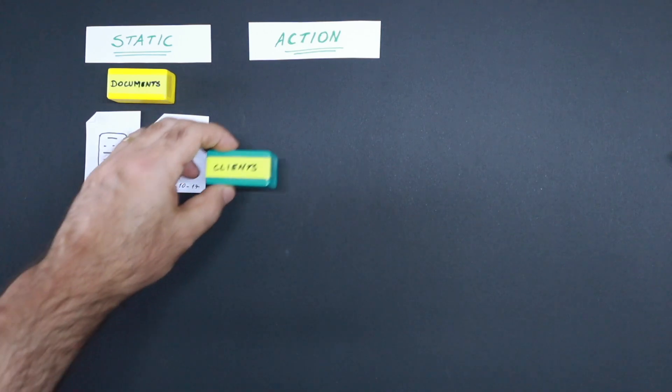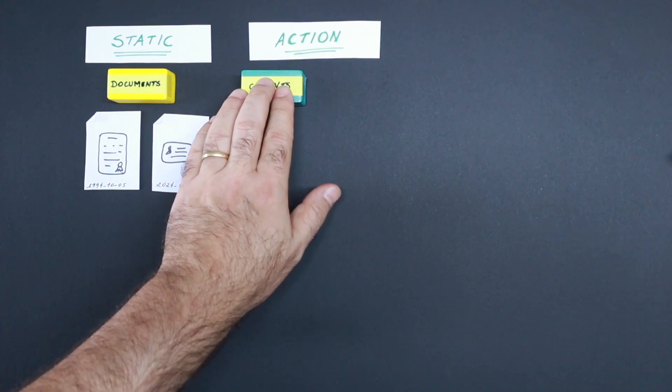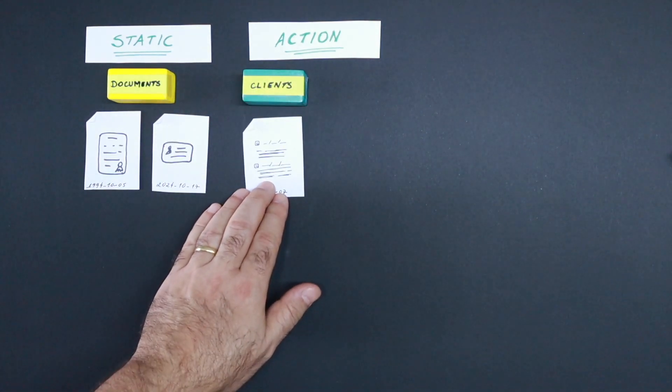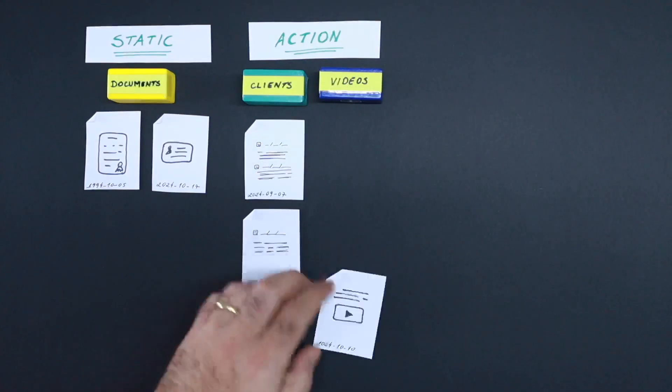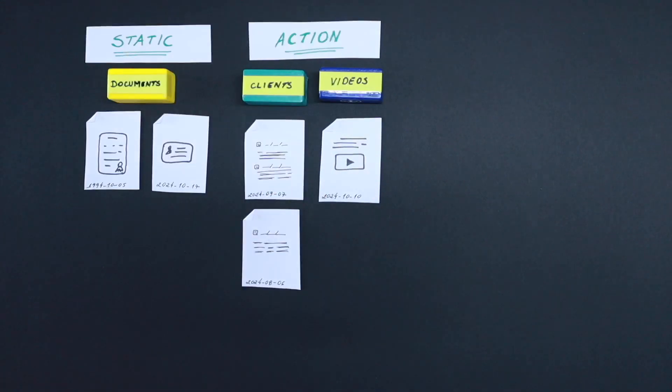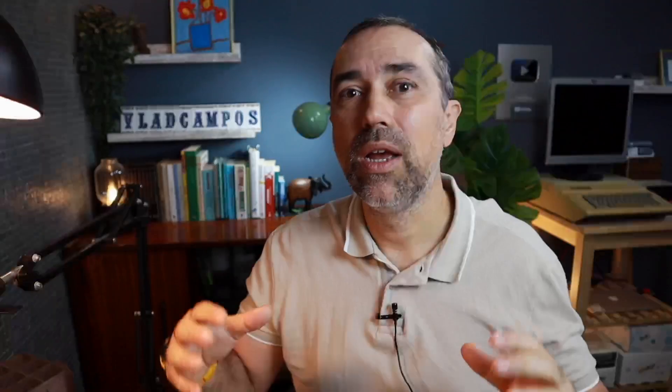Then there are the action containers — they exist for everything that is in progress. For example, clients you are still working with can be inside action containers, videos you are producing can be inside action containers, a project you are working on can be inside an action container. Each one of these activities has its own action container, and each static activity has its own static container.